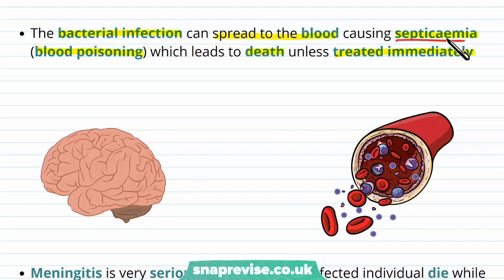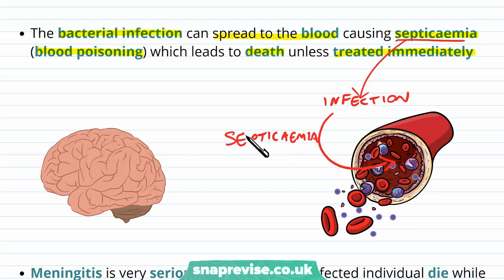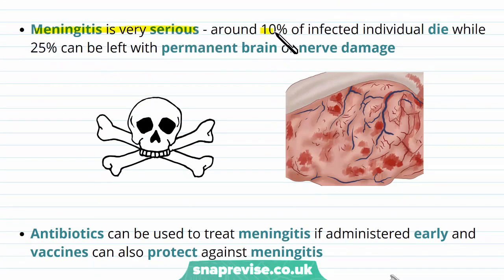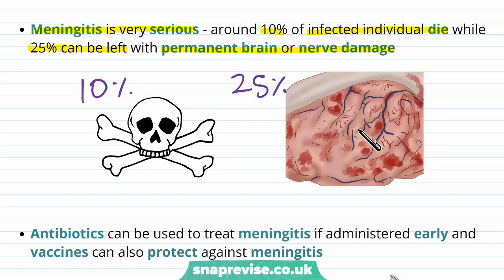Septicemia basically refers to any time where we have an infection at a particular area of the body and the infection has managed to reach the bloodstream, which is very dangerous. The blood goes all around the body and will take this pathogen and its poisons all around the body, causing lots of different problems. Meningitis is very serious — about 10% of those infected will die, and 25% will be left with permanent brain or nerve damage.